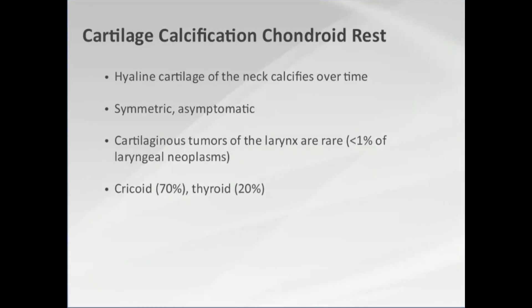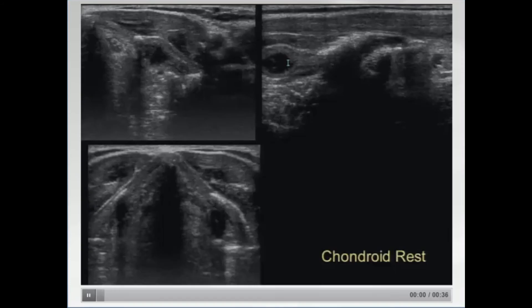One thing to be aware of when scanning a post-thyroidectomy neck is that less experienced imagers, with no thyroid gland to picture, start photographing a lot of things in the neck that belong there — like vocal cords or structures they hadn't noticed before. One important thing to know is that the cartilage of the neck calcifies. It starts out sonographically visible and then can calcify as patients get older. It should be symmetric and asymptomatic, because cartilaginous malignancies of the neck are extremely rare.